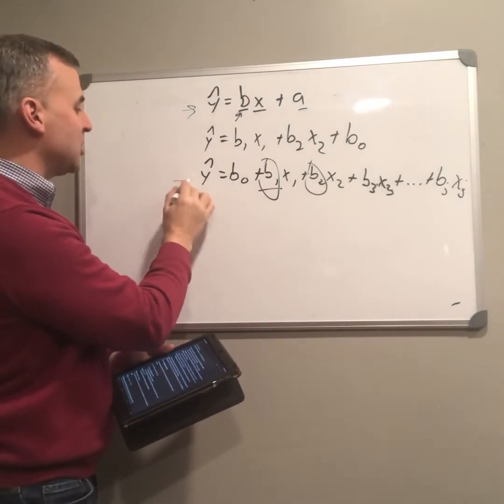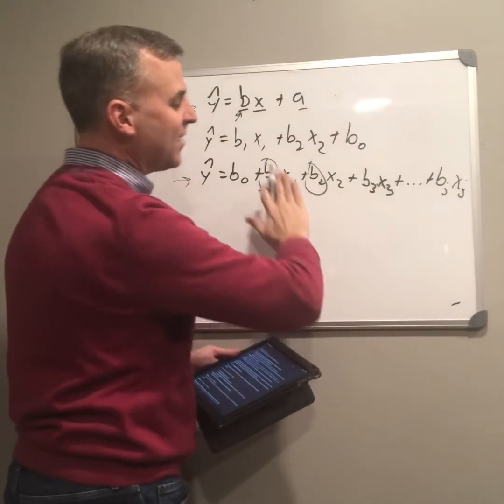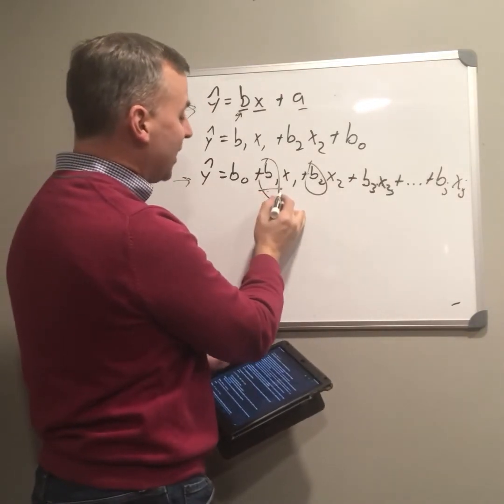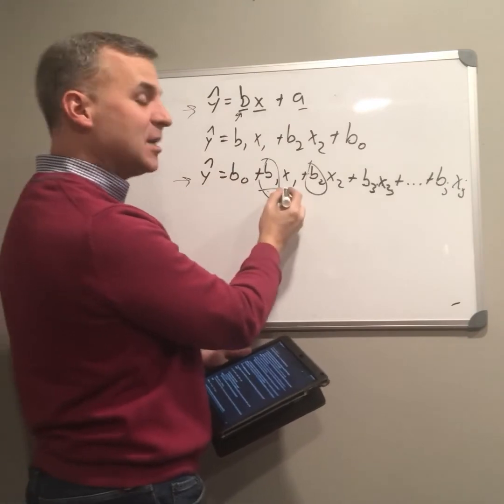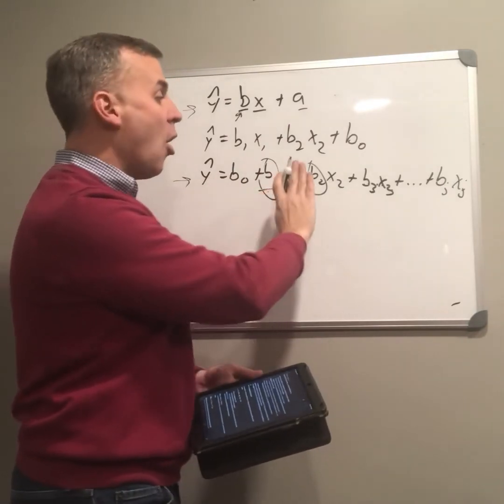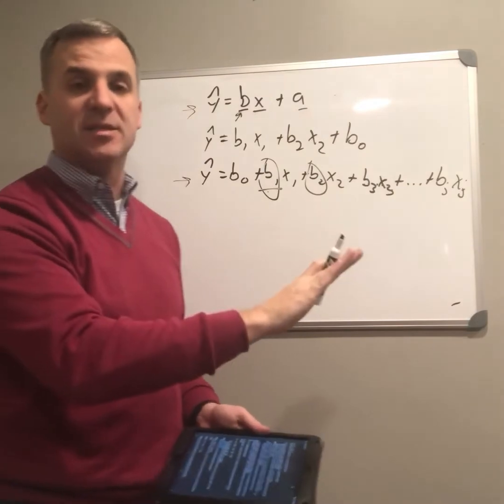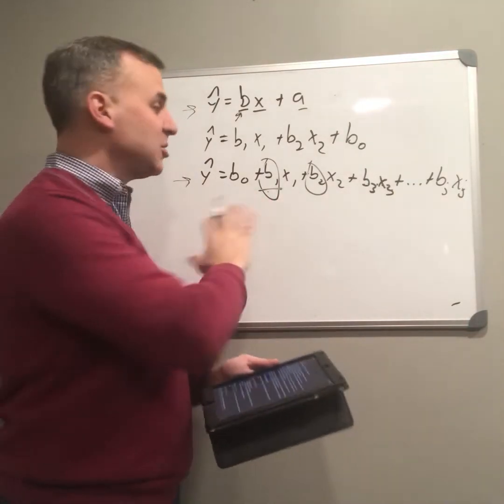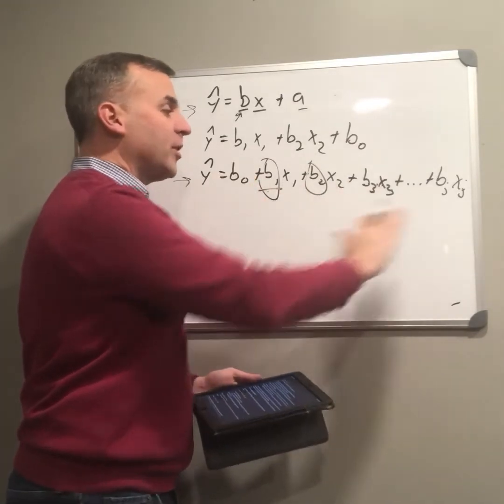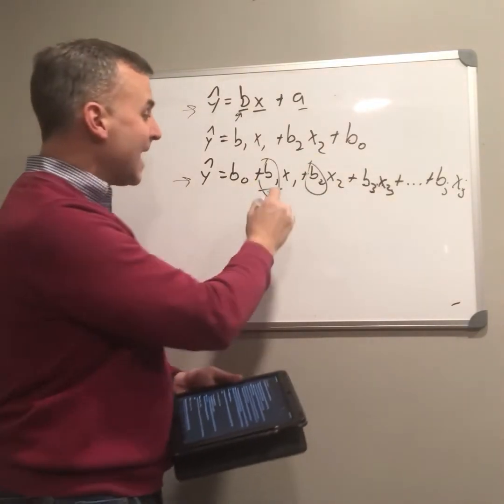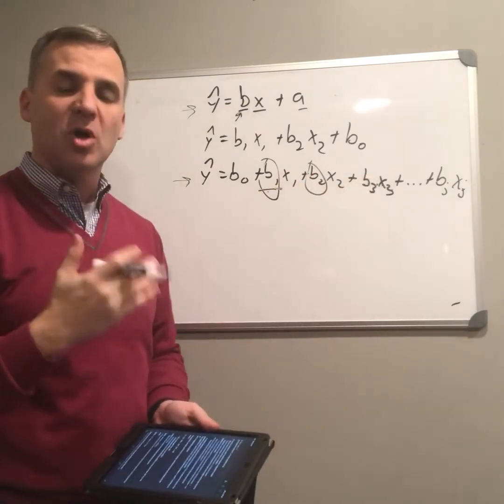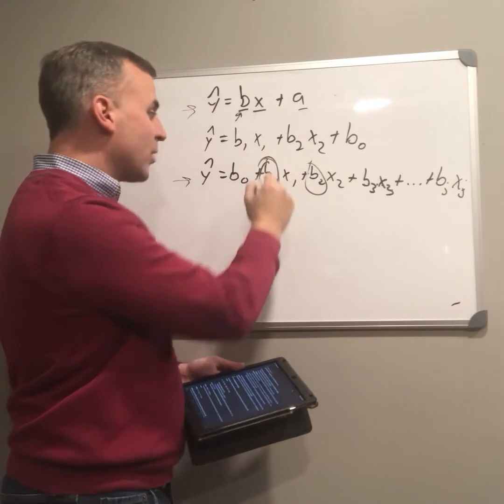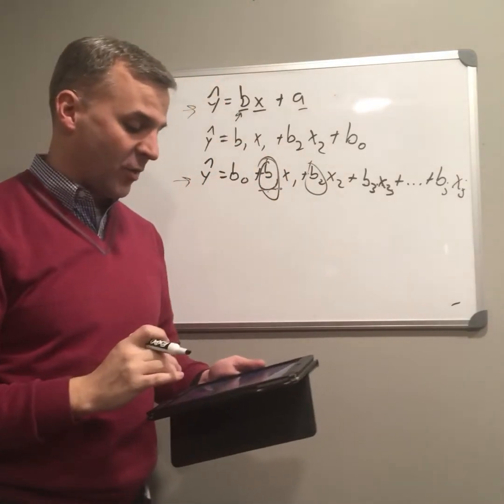In multiple regression, that's true, but it's only true of this one predictor. We have to hold all the other predictors constant. So b sub 1 is the rate of change in y for a single point change in x sub 1 holding all other predictors constant. All other variables constant. So it's not just the rate of change. It's the rate of change holding all these other variables constant. And this is going to change depending on what these other variables are. As we add or subtract variables to this, this rate of change will actually be different across different equations.